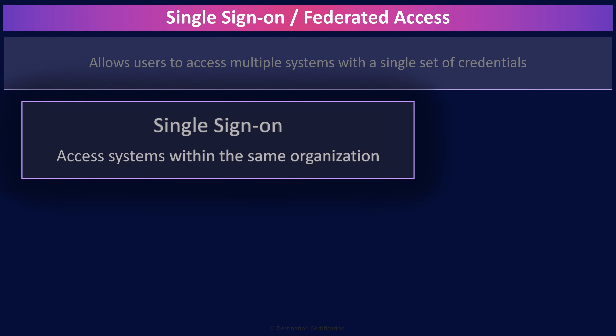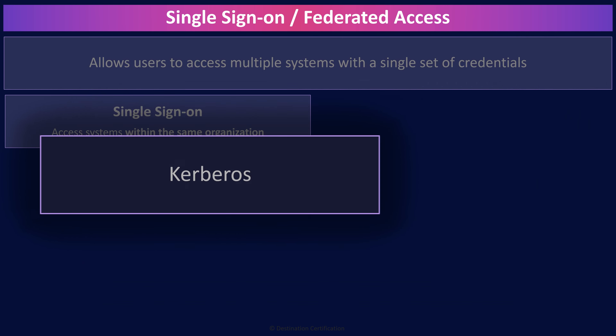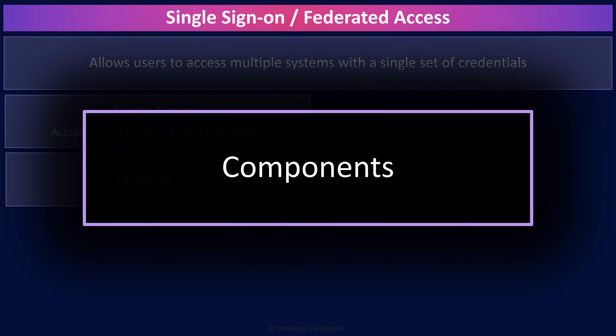A major protocol that enables single sign-on is Kerberos. Kerberos enables authentication via tickets over an insecure network. Kerberos is a very complicated protocol that is very flexible and, as such, has a lot of components.